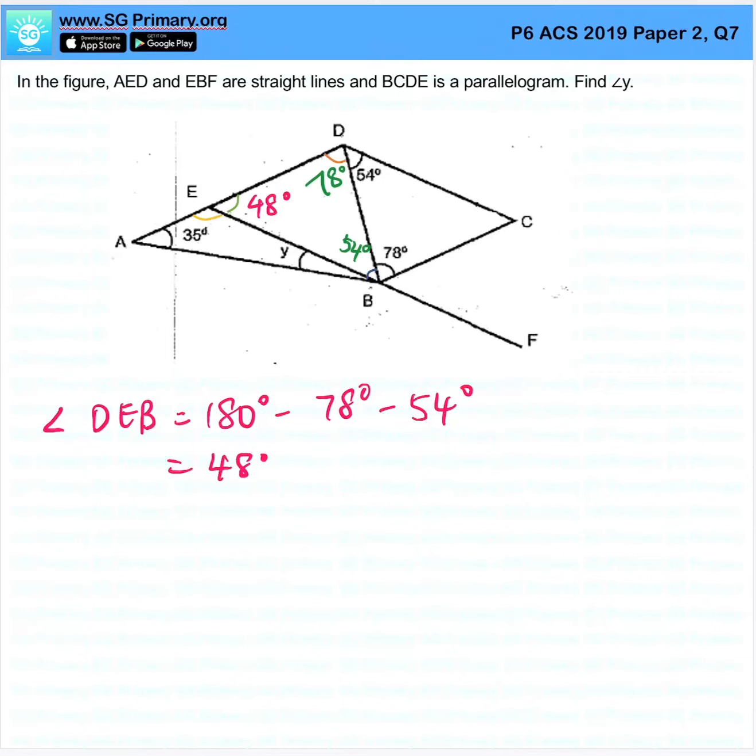They tell us AED is a straight line, so we can therefore find angle AEB, which is 180 minus 48, 132.